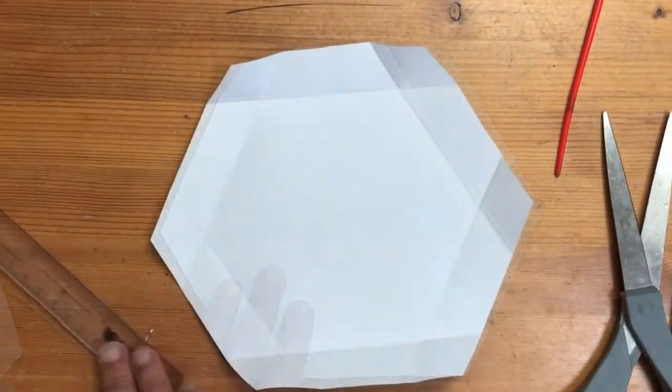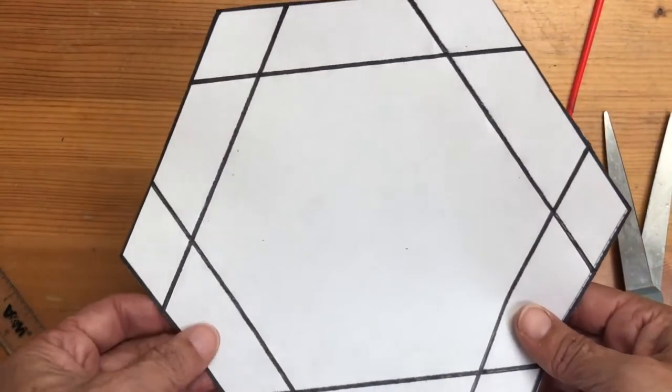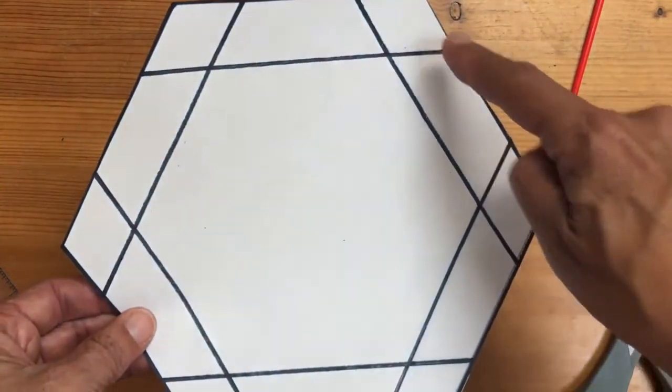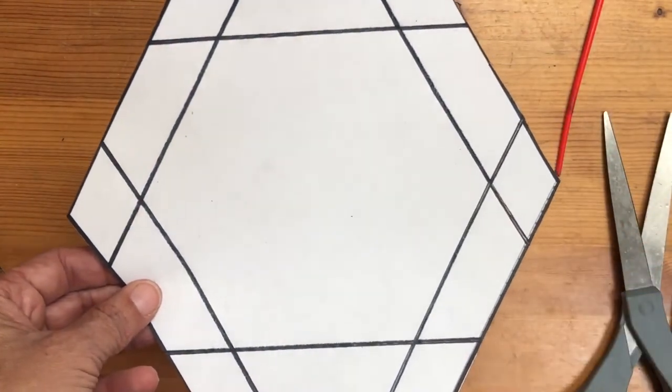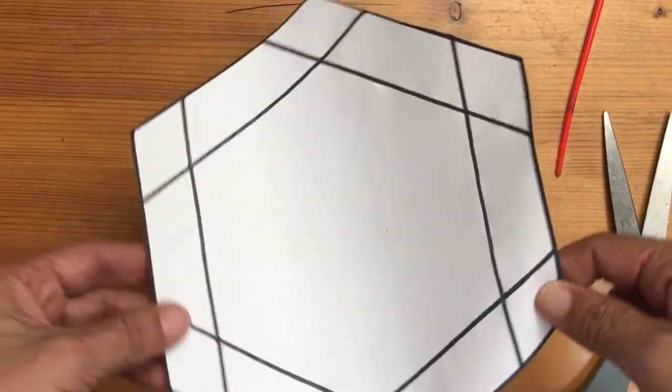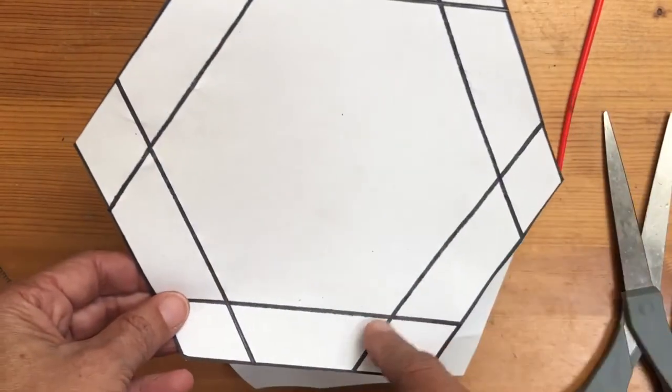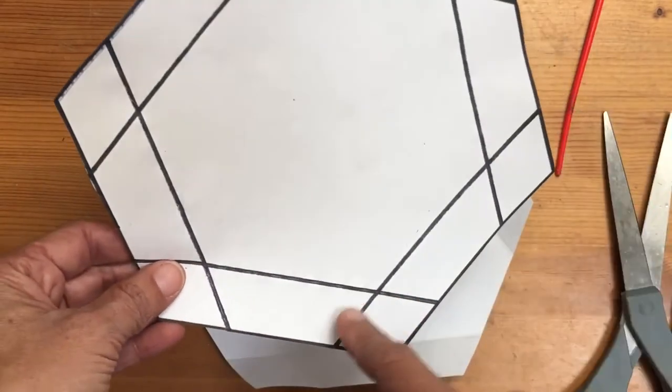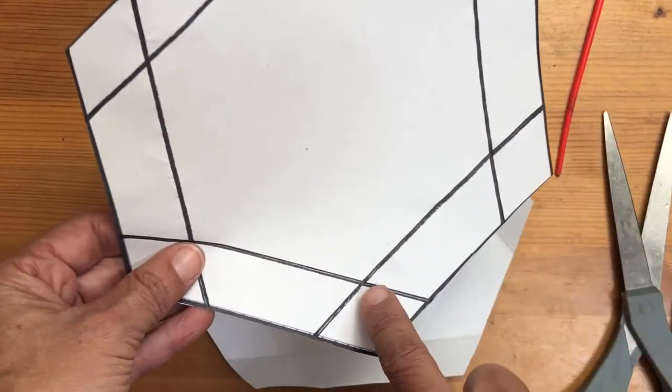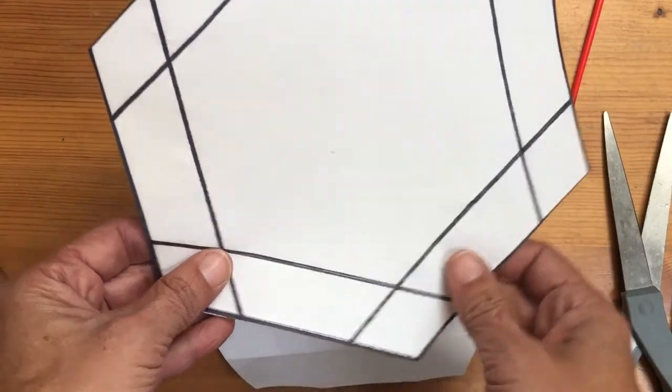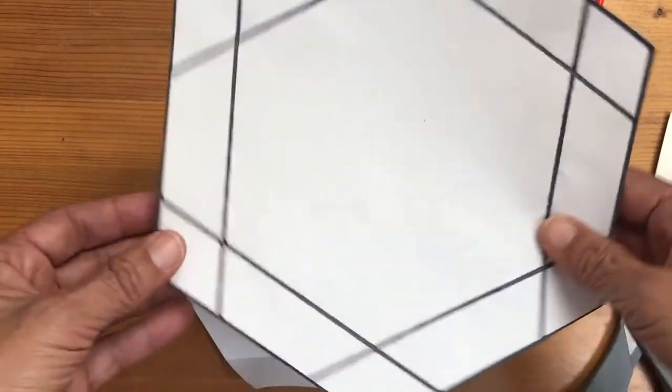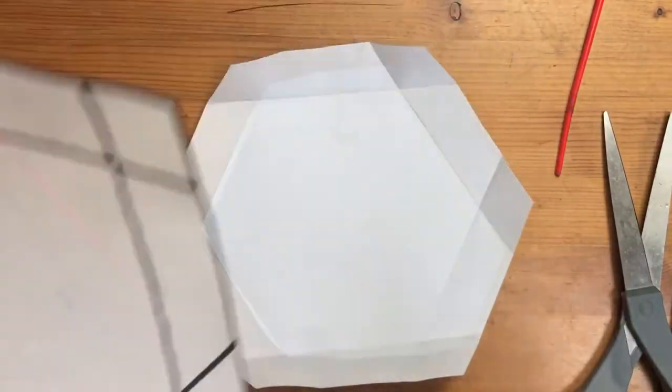Once you have all the folds folded, I'm going to refer back to the template and point out these diamonds on the corners of the hexagon. What you'll need to choose is one slope of the diamond to cut on all sides of the hexagon. You're just going to cut that one line, rotate, cut the other line, rotate, cut the other line, all the way around.